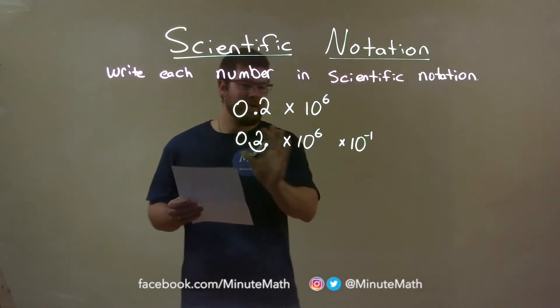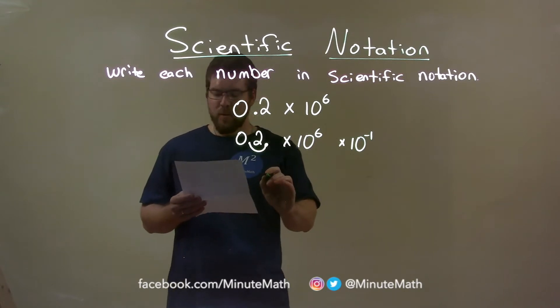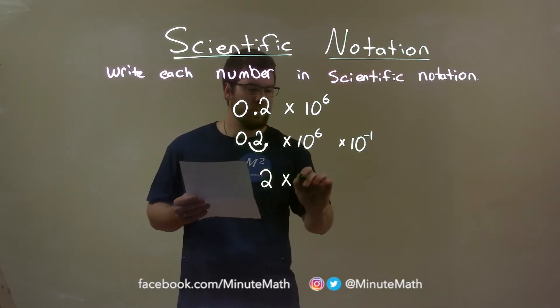Okay, that will kind of cancel out that decimal place moving. So now we can simplify. We have 2 times, well, 10 to the,